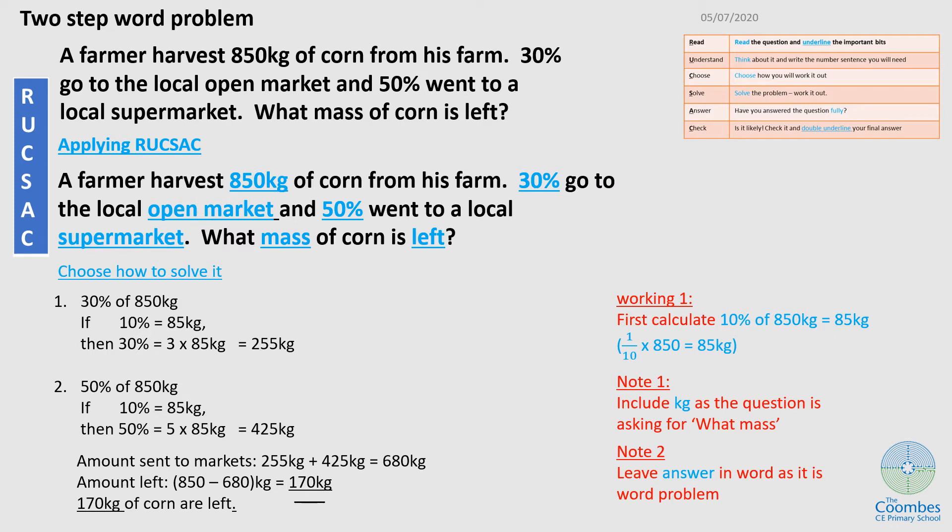So the first is, let me write 30% that was sent to the open market of 850. And then I have also 50% sent to the supermarket. So these are the number sentences of amounts that are sent to different places.